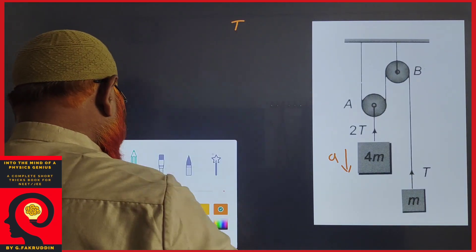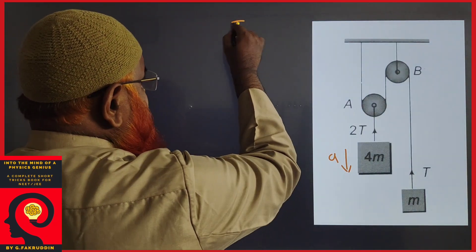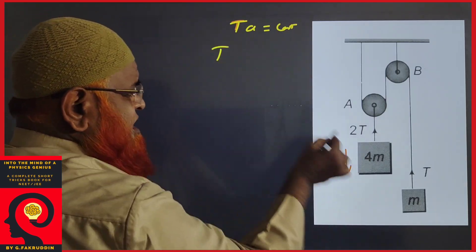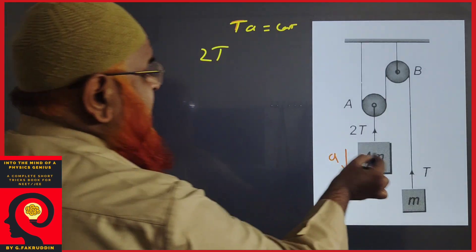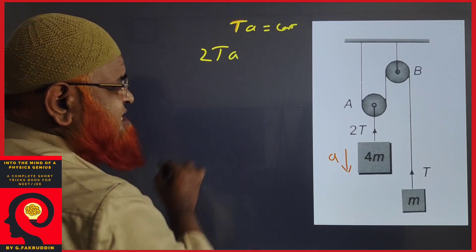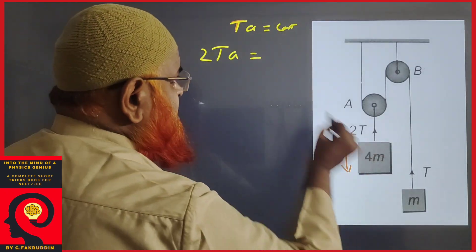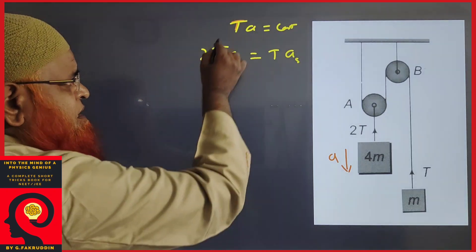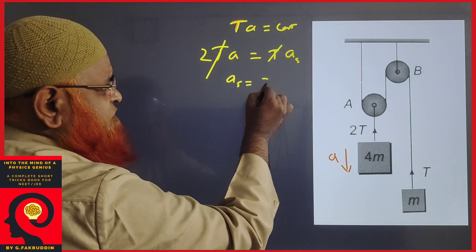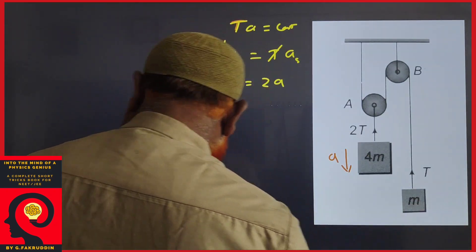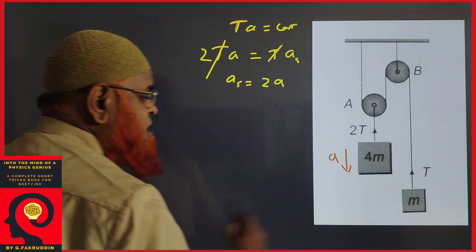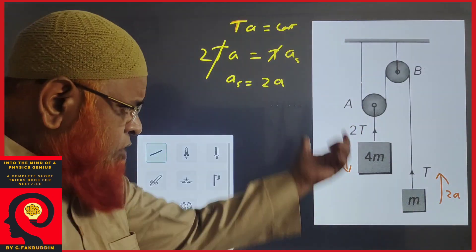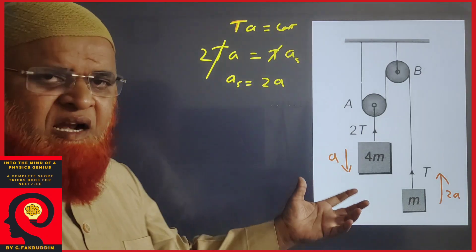The tension and acceleration are going to be constant. The tension of this larger block is taken as 2T and acceleration of this larger block is a. The tension on the smaller block is T and acceleration of the smaller block is a_s. You can cancel this, meaning the acceleration of the smaller block is 2a.